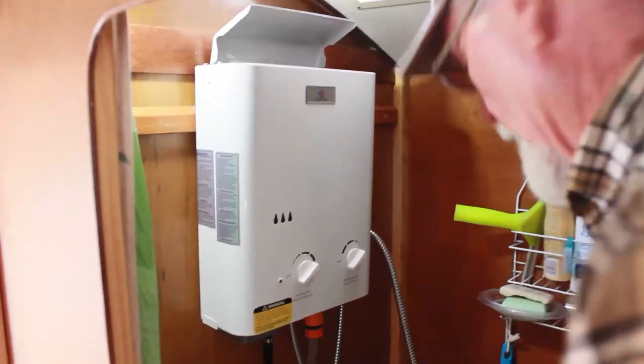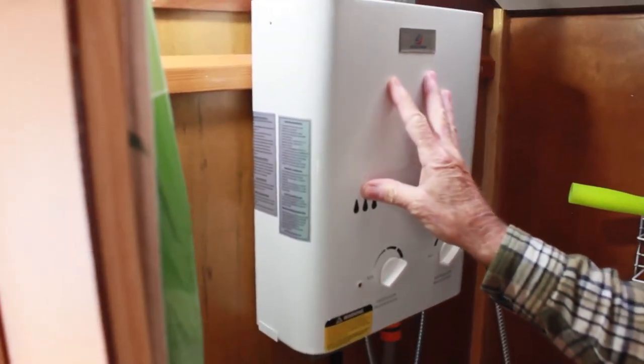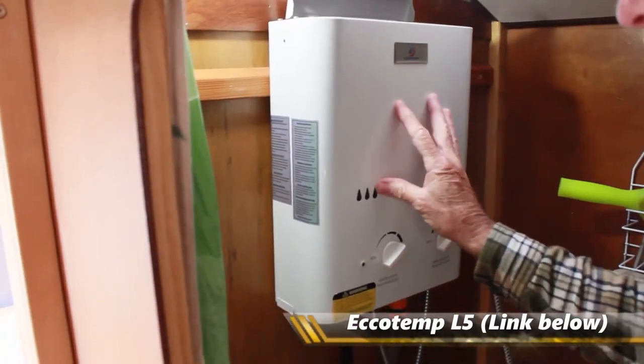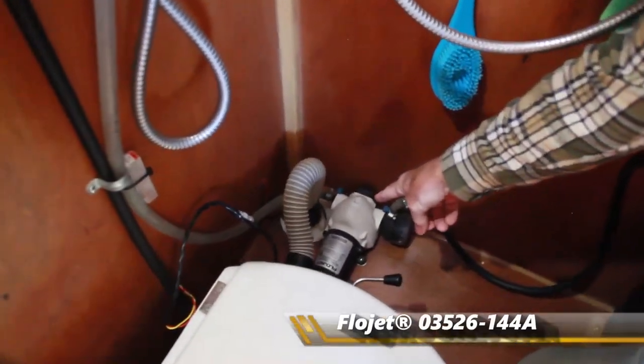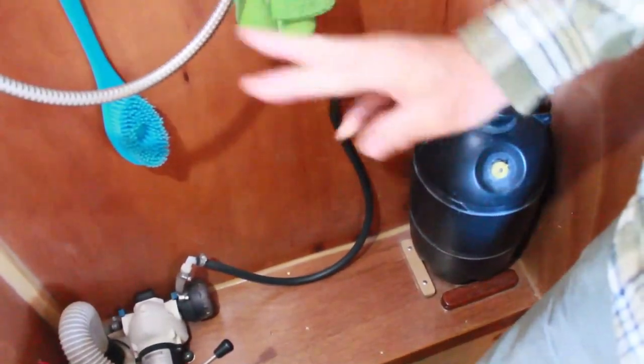I have basically three components to this system. This is the heater itself, which is an Echotemp L5, the smallest one that this company makes. Then we have a pump down here, a flow jet. Then here we have a reservoir. That's the three pieces.